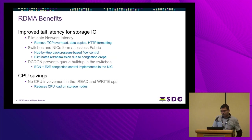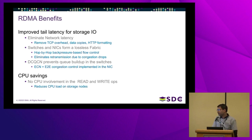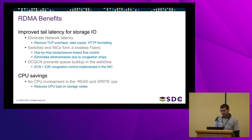The benefits of RDMA include improved tail latency, especially for storage I/O, by eliminating TCP overhead, data copies, and HTTP formatting. The switches and NICs form a lossless fabric with hop-by-hop back-pressure control — PFC — that eliminates retransmission due to congestion drops.